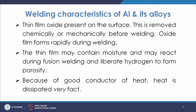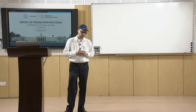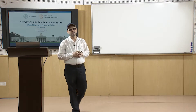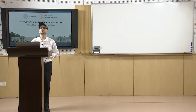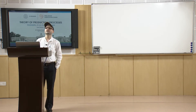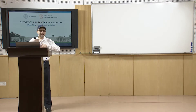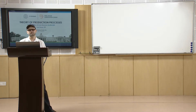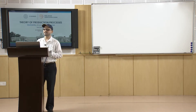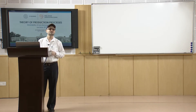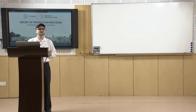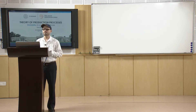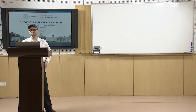An important challenge in welding aluminum is the thin oxide film of Al2O3 present on the surface. This must be removed chemically or mechanically before welding. The oxide film also rapidly re-forms during welding, so suitable flux must be used in welding and brazing, and thickly coated stick electrodes must be used in metallic arc welding.